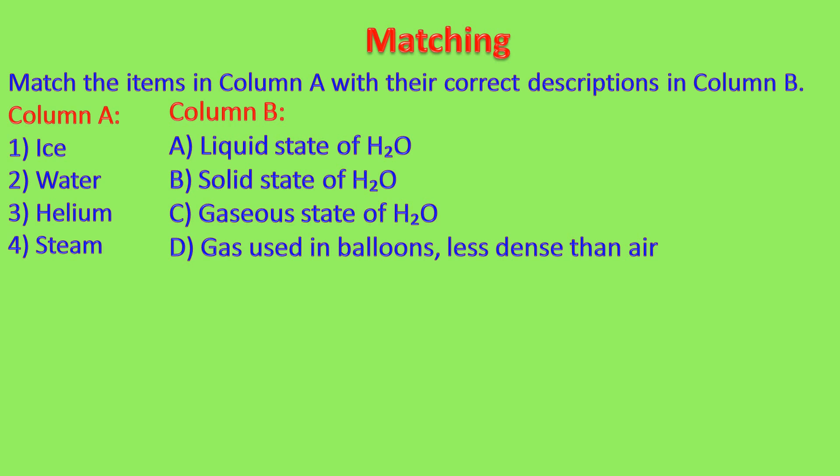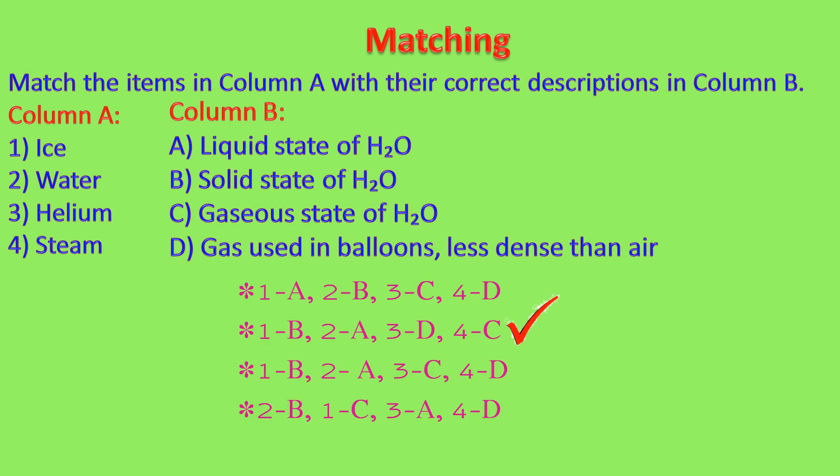Let us see another matching question. Match the items in column A with their correct descriptions in column B. Column A has ice, water, helium, and steam. Column B descriptions are: liquid state of H₂O, solid state of H₂O, gas state of H₂O, gas used in balloons less dense than air. Ice is the solid state of H₂O. Water is the liquid state of H₂O. Helium gas is used in balloons and is less dense than air. Steam is the gas state of H₂O. So the answer is 1-B, 2-A, 3-D, 4-C.